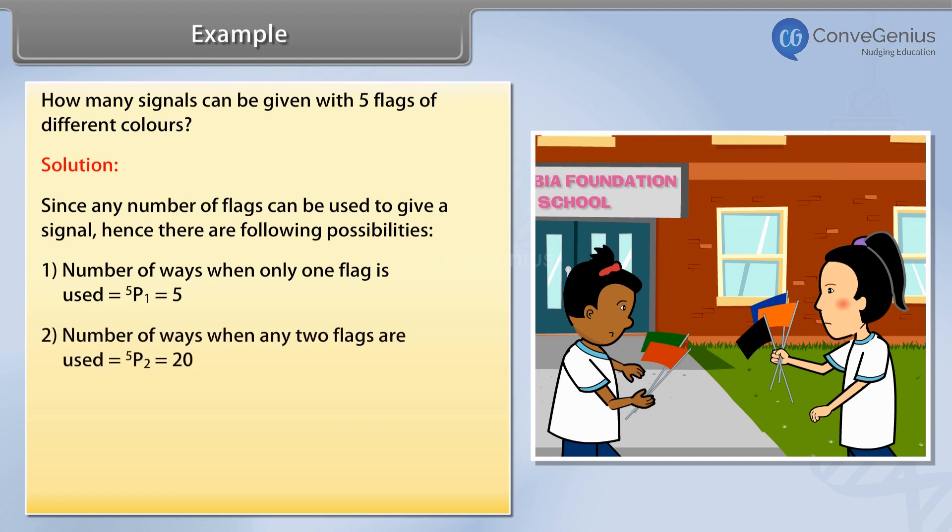2. Number of ways when any two flags are used is equal to 5P2 = 20. 3. Number of ways when any three flags are used is equal to 5P3 = 60.